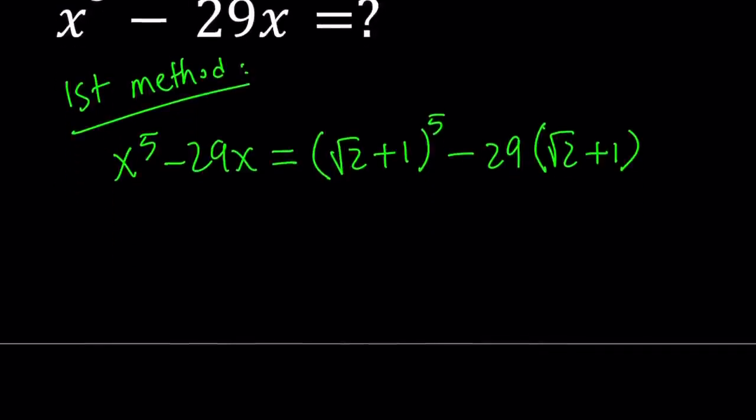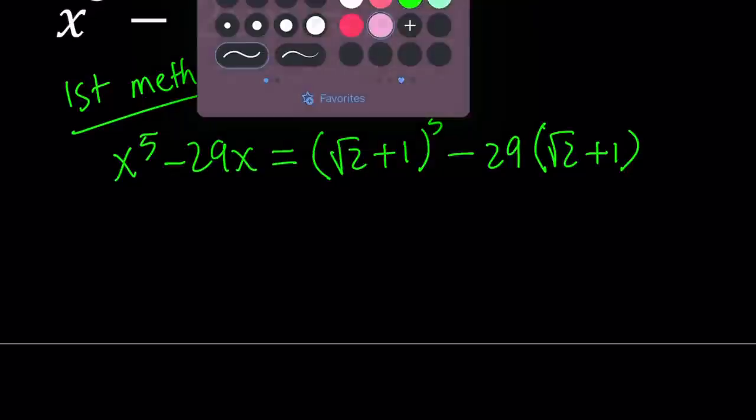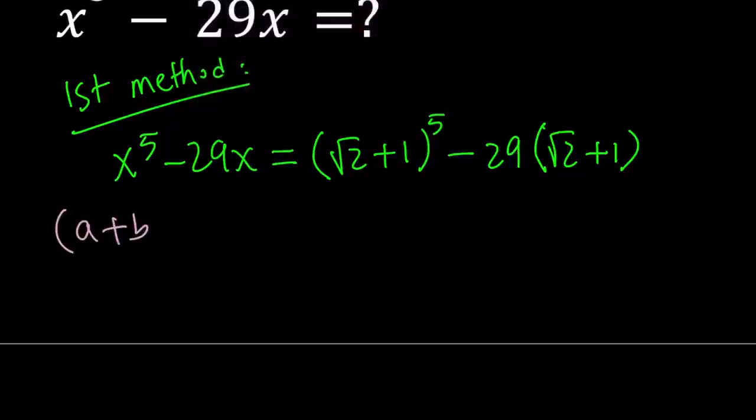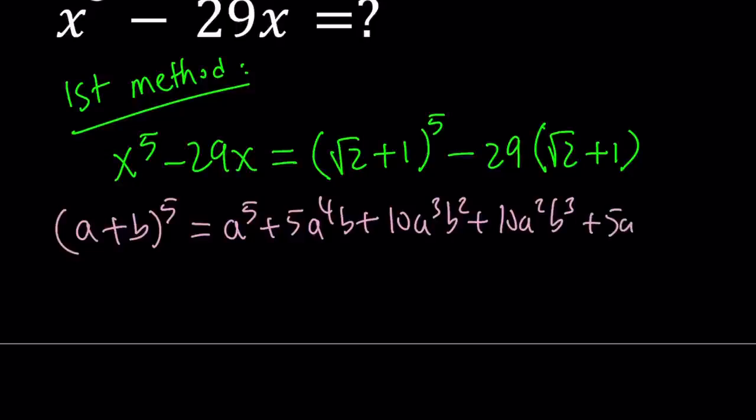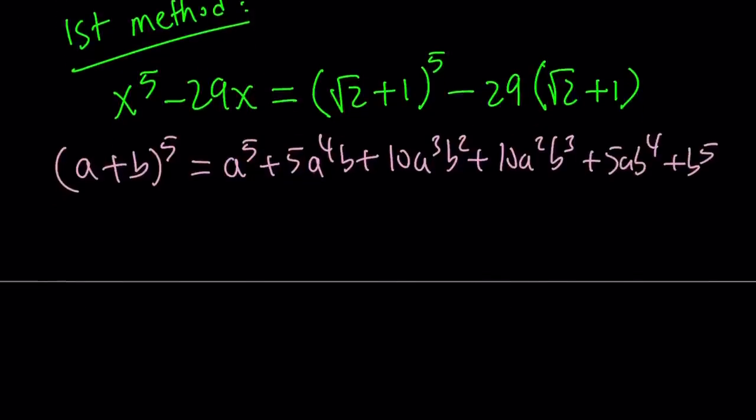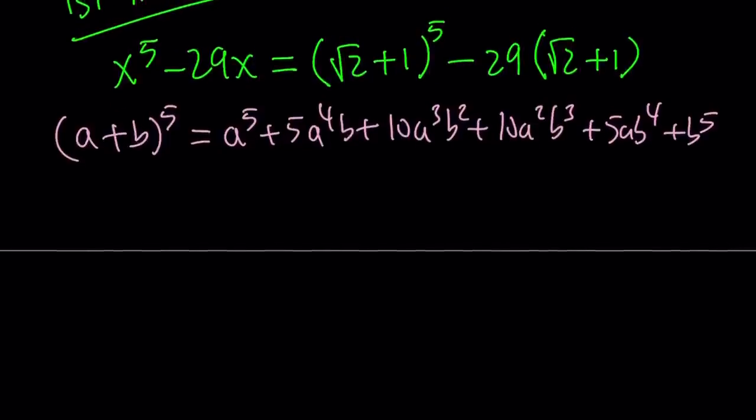And obviously for square root of 2 plus 1 to the 5th power, we do need the binomial theorem. So let's quickly remember what it looked like for the 5th power. If you have a plus b to the 5th power, it's going to be a to the 5th plus 5a to the 4th b plus 10a cubed b squared plus 10a squared b cubed plus 5ab to the 4th power plus b to the 5th power. Notice the symmetry in terms of powers and coefficients.